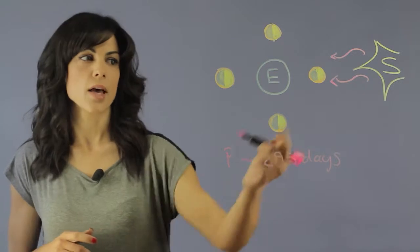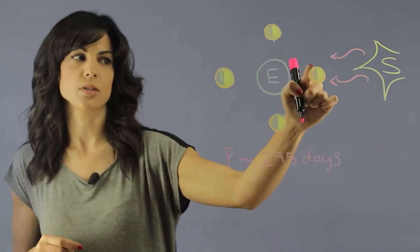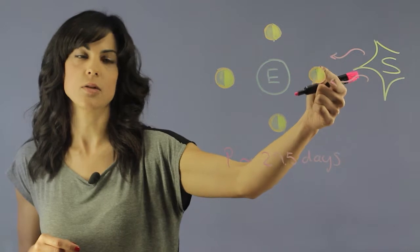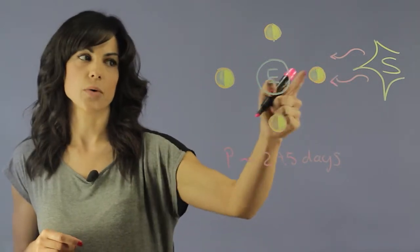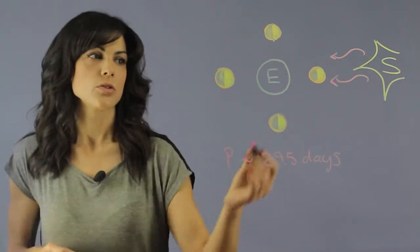If we're here on Earth and the moon is over here, we're going to see the dark side. So as you can tell the sunlight is illuminating this side of the moon and we're only seeing the back of it. So this is the new moon.